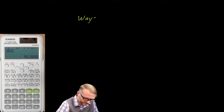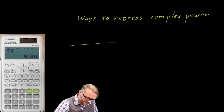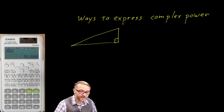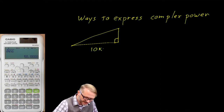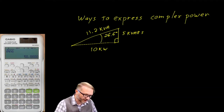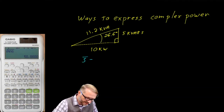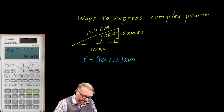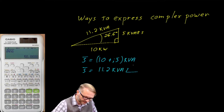While we're on the topic, let me show you how many different ways there are to express complex power. One way is to present the power triangle — arguably one of the more straightforward ways. Assuming 10 kW and 5 kVars, that works out to 11.2 kVA at an angle of 26.6 degrees. From there, you could say complex power equals 10 plus J5 kVA in rectangular form, or 11.2 kVA at a phase angle of 26.6 degrees in polar form.